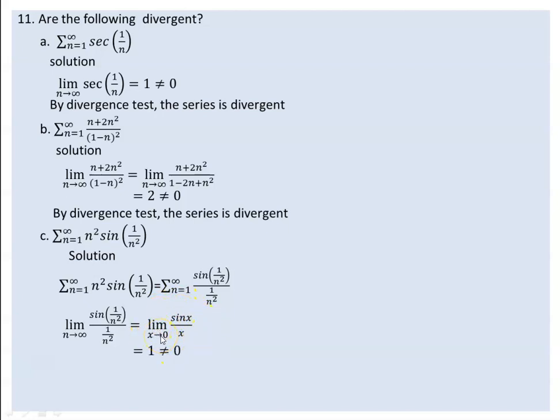So, by the divergent test, since the limit is not zero — it equals 1 — the series is divergent. If the limit does not equal zero, then by the divergent test we can conclude the series is divergent. If the limit exists and is not zero, automatically by the divergent test the series is divergent.